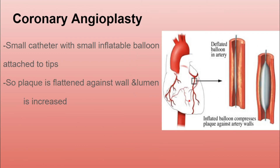In the case of coronary angioplasty, it is mainly done when the heart vessels get narrowed — that is, in angina pectoris or narrowing of the coronary artery. In this procedure, a small catheter with a small inflatable balloon is attached to the tip at the blocked part of the coronary artery, and then the balloon is inflated. Whatever plaque is occluding the artery gets flattened toward the lumen wall, increasing the lumen of the coronary artery and allowing blood to flow normally again.